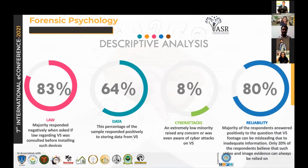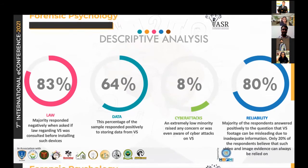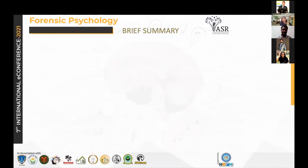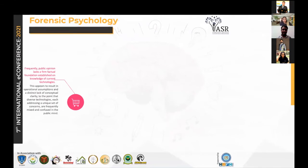The next factor is reliability, where 80% of respondents said they don't consider visual surveillance data to be reliable and think it can be misleading, while only 20% said visual surveillance data can always be relied on. To summarize these factors: public opinion lacks a firm factual foundation. The public usually has an operational assumption about how such technologies work, resulting in a lot of mixing of technologies and confusion, which does not give us accurate results.